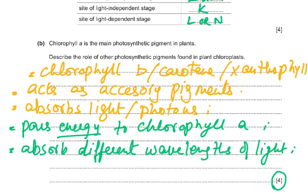The important point is wording: chlorophyll b, carotene, and xanthophyll are the accessory pigments. They absorb light or photons and pass on the energy — not the light itself — to chlorophyll a. These accessory pigments absorb different wavelengths of light not absorbed by chlorophyll a. You need to know this whole topic thoroughly, and I always say: when you revise a chapter, do all the questions. Buy the topicals and do all the latest questions from the last three to four years.